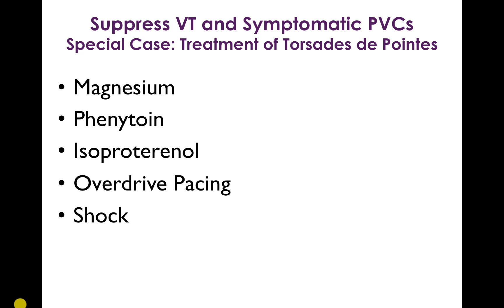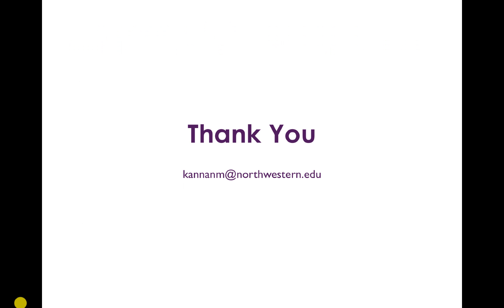For torsades de pointes, the goal is to treat the underlying electrophysiologic milieu, since it occurs because of early afterdepolarizations. Drugs that help include magnesium, phenytoin, isoproterenol, and overdrive pacing. However, like all forms of active ventricular tachycardia, the best therapy in the acute setting is cardioversion. Thank you — I hope these webcasts were informative and lay the groundwork for our discussion in class.